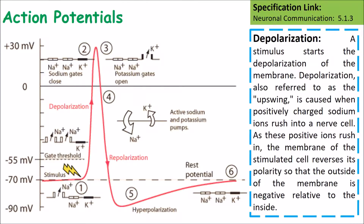Depolarization starts when the membrane becomes depolarized by the movement of sodium ions. Depolarization, also referred to as the upswing, is caused when positively charged sodium ions rush into the nerve cell through sodium ion channels. As these positive ions rush in, the membrane of the stimulated cell reverses its polarity, so the outside of the membrane becomes negative relative to the inside.